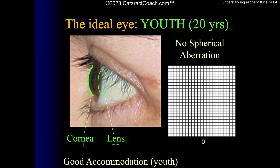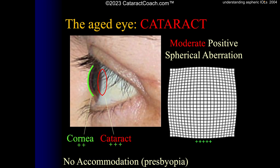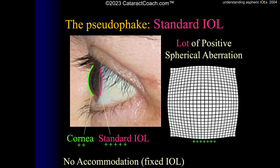Around age 45 or 50, the cornea remains the same, but the aging crystalline lens loses its negative spherical aberration — it shifts closer to zero. So the overall eye now has a mild degree of positive spherical aberration, which may actually help by increasing depth of field as accommodation decreases due to presbyopia. A cataract eye has even more positive spherical aberration as the cataract develops, giving a lot of overall spherical aberration. The older standard spherical IOL, which we don't use much in 2023, would increase that even further.